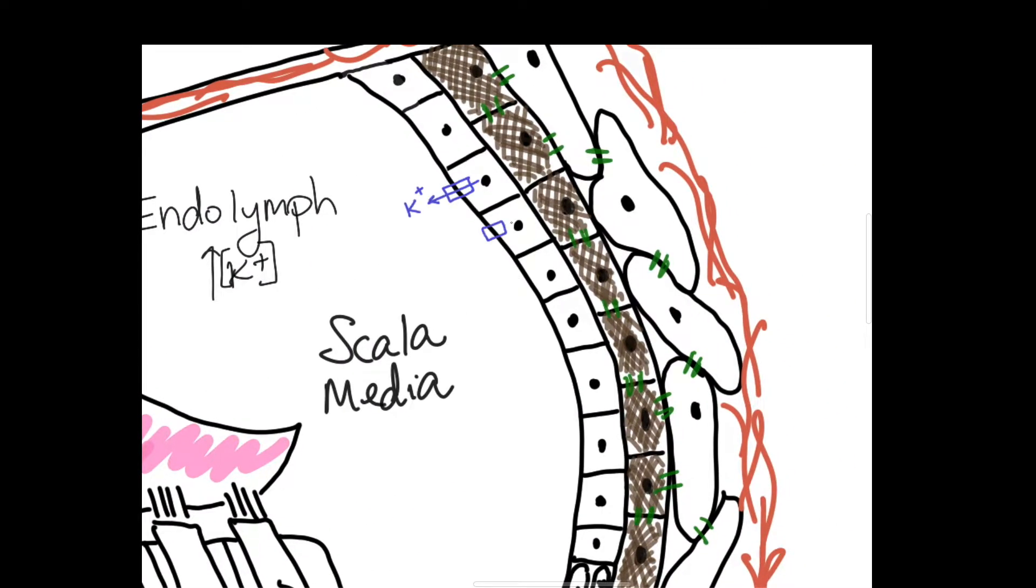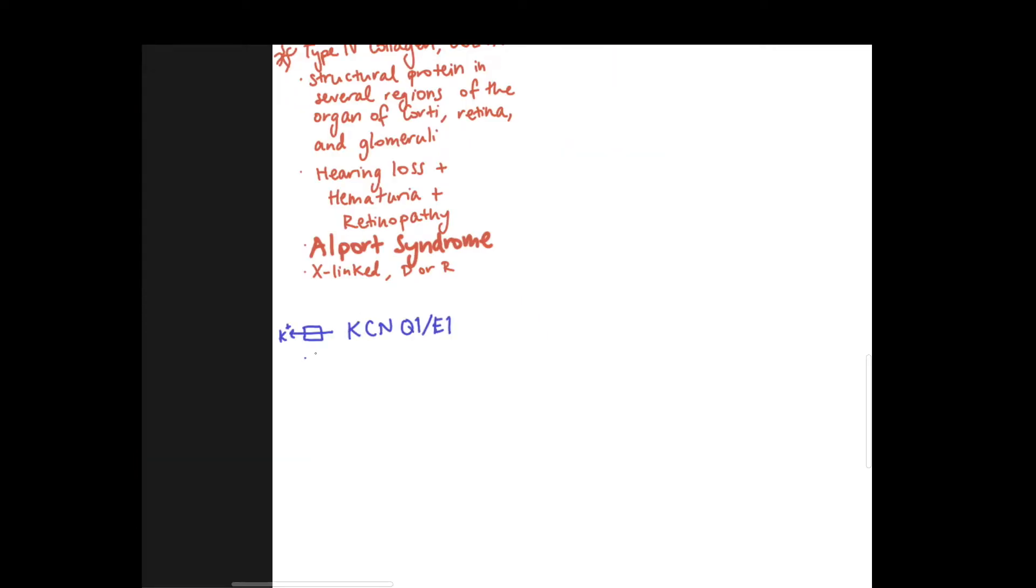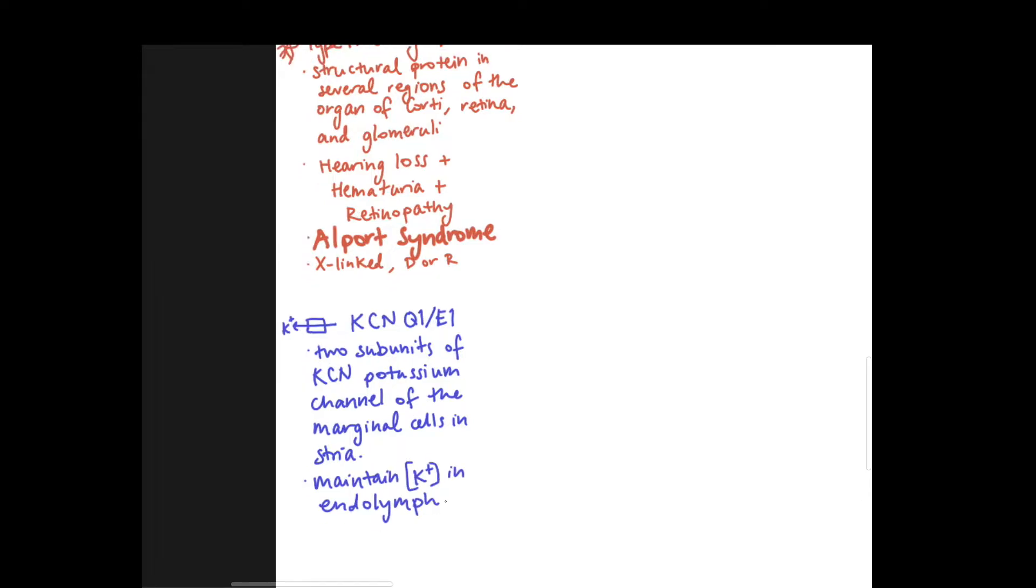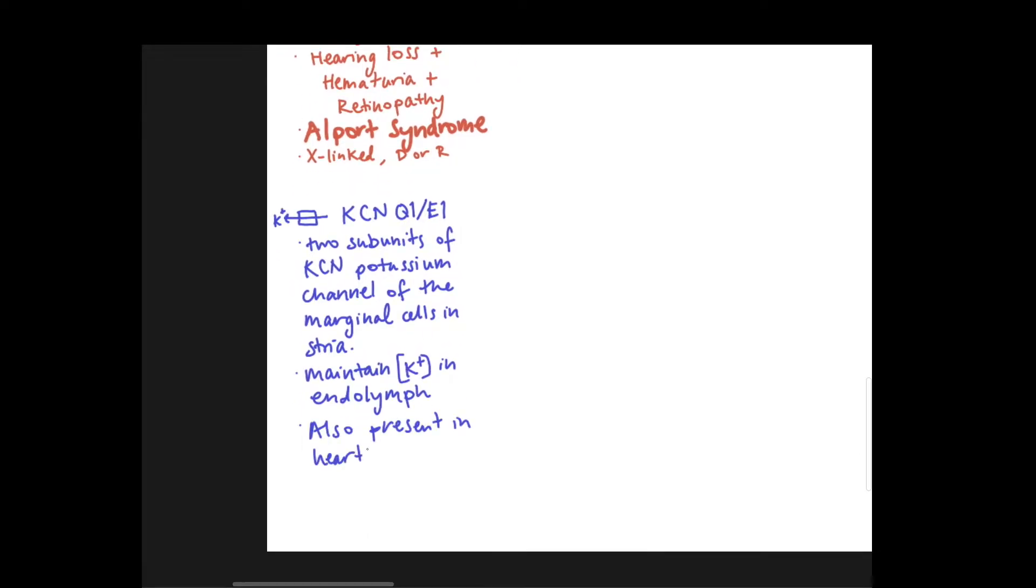There's a potassium channel called the KCN channel located in the marginal cells of the stria. It's super important in maintaining potassium concentrations in the endolymph and it's also present in the heart. So the syndrome of these patients is that they have hearing loss and long QT. It's Jervell-Lange-Nielsen syndrome. This is a can't-miss diagnosis in kids born with hearing loss because they can develop syncope or sudden death from the cardiac effects.